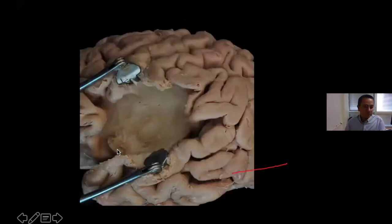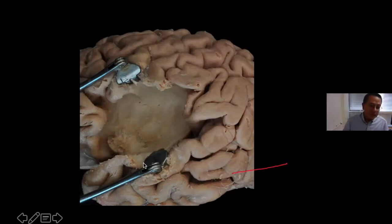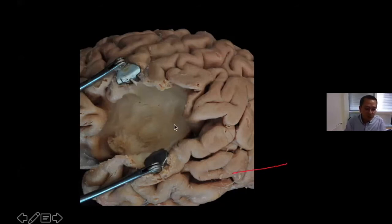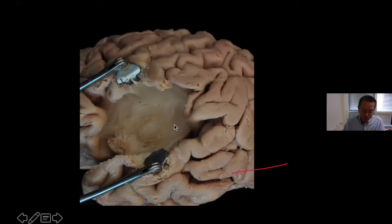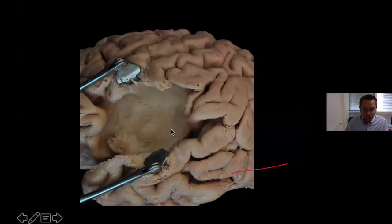When you take the cortex out at the level of the insula, the first thing you see is fairly amorphous white matter coming to the frontal and temporal opercula — this is the subcortical white matter of the insular surface, the equivalent of what we did for the lateral aspect of the brain. This is nothing less than the extreme capsule, but seen in three dimensions rather than as a cut on MRI. When we remove those fibers, very organized fibers become visible.